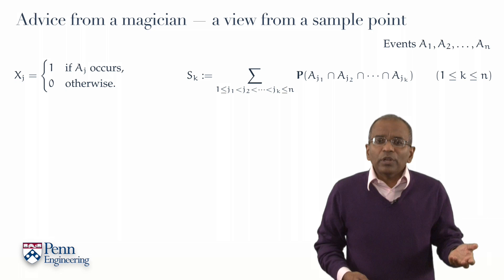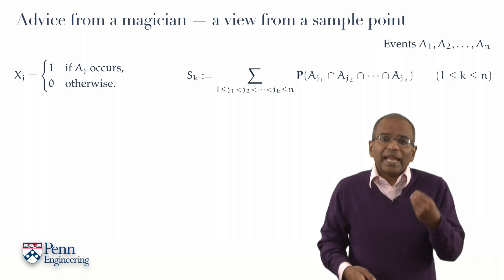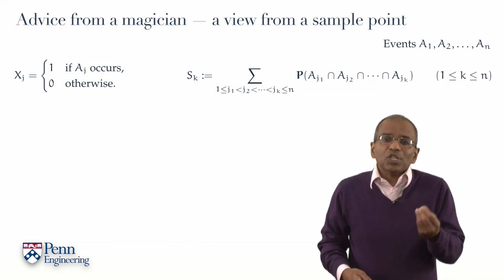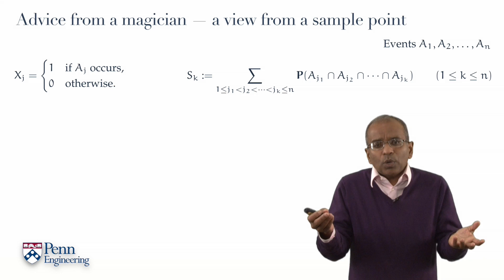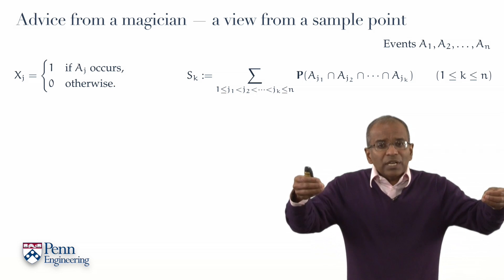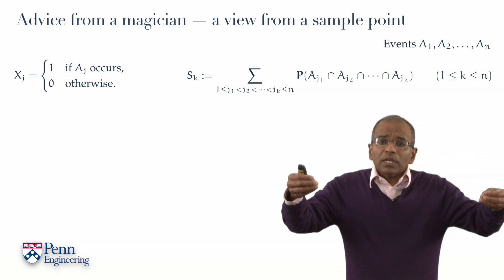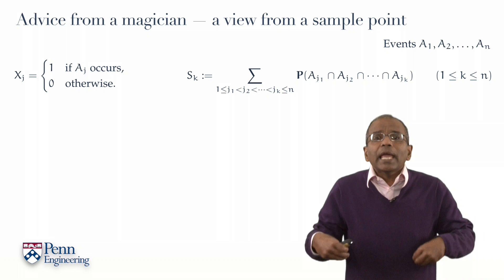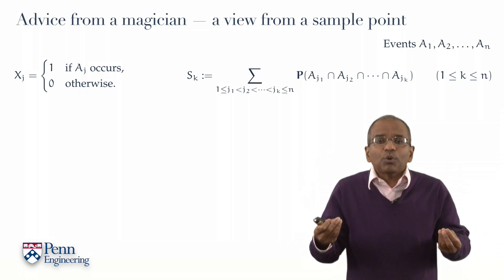In our inclusion-exclusion formulations, we're going to see terms like Sk. Sk plus 1, well, what is Sk plus 1? Well, simply in that formulation, replace k by k plus 1. In other words, add all k plus 1 wise intersection probabilities.